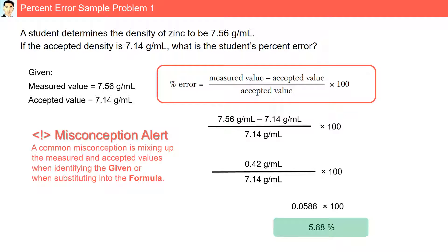Misconception alert. A common misconception is mixing up the measured and accepted values when identifying the given or when substituting into the formula.